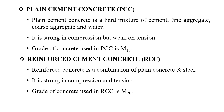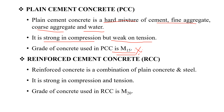Plain Cement Concrete (PCC) is used for plain concrete applications. It is strong in compression but weak in tension. Reinforced Cement Concrete (RCC) has steel present and is strong in tension. The minimum grade of concrete for RCC is M20, and for PCC it is M15.